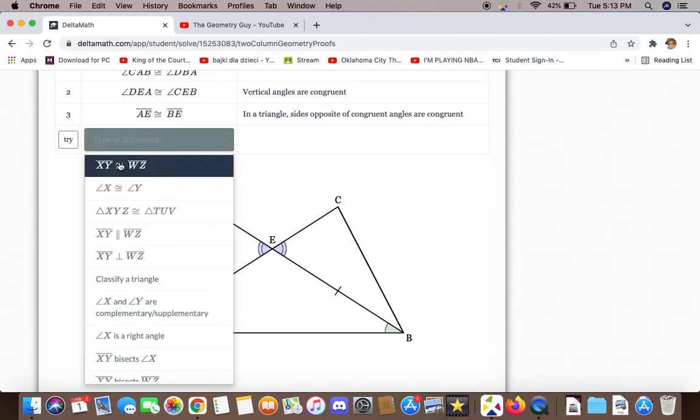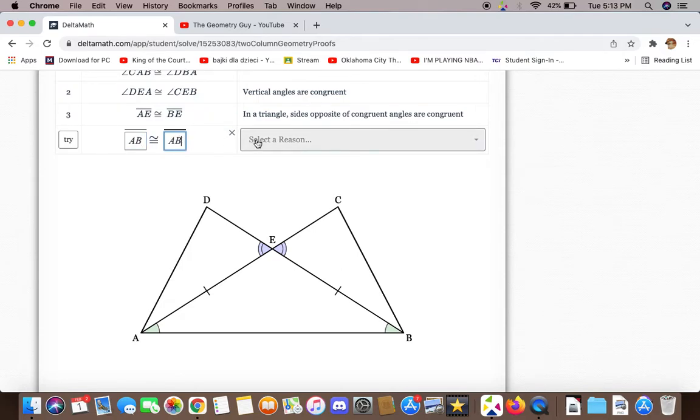We can also say that AB is congruent to itself because of the reflexive property.